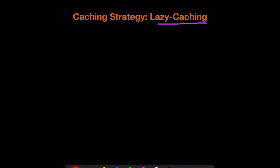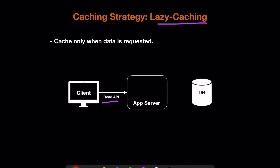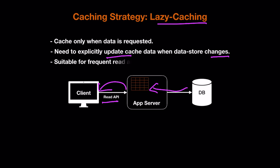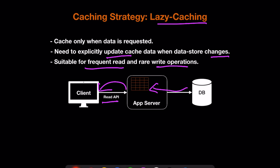There are different caching strategies. The first is lazy caching, where we cache data only when it is requested by the client. When a client calls our read API, the app server first looks in the cache; if it doesn't find the data, it requests from the DB, updates the cache, and returns the response. With lazy caching, we need to explicitly update cache data when the data store changes. It is suitable for frequent read and rare write operations — for example, one write per day but thousands of reads.